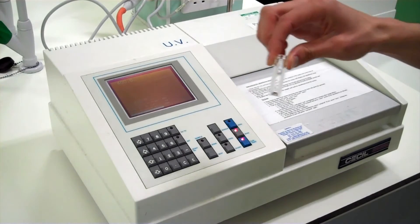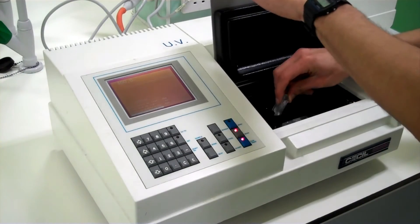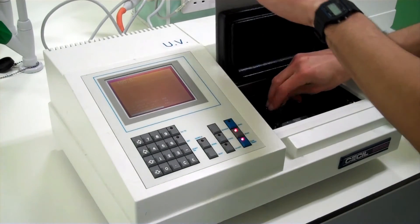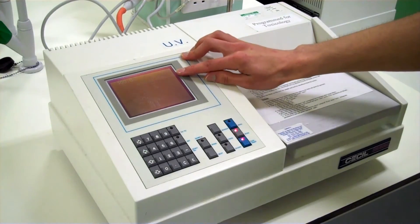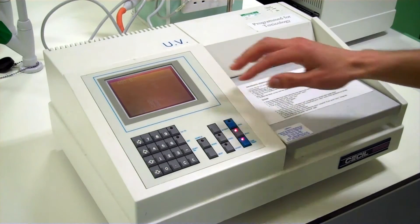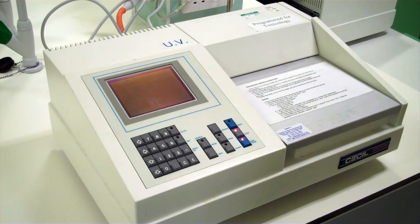Then we can load our blank and press run. The screen will say storing baseline. The blank tells the spectrophotometer what zero is so the absorbance of the cuvette and solvent are accounted for.